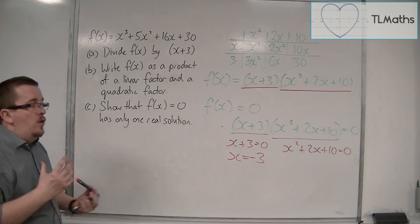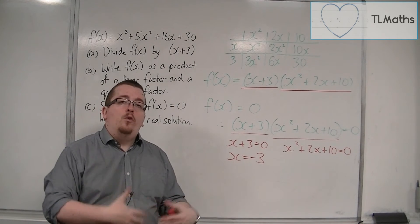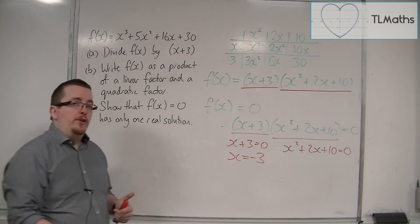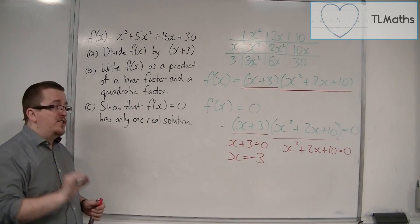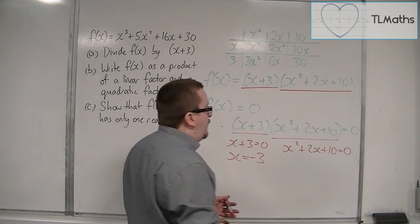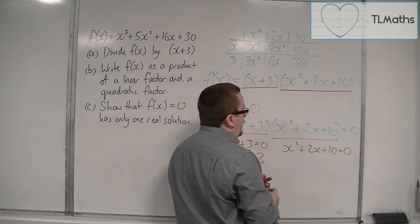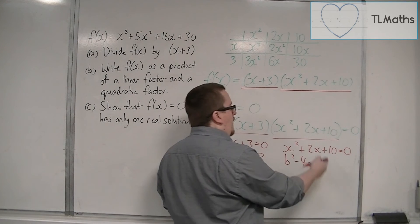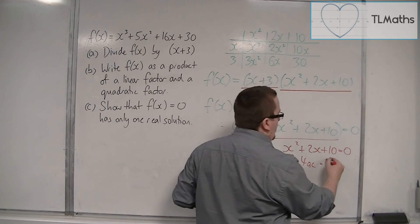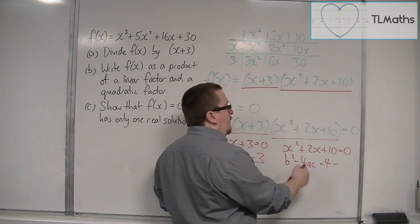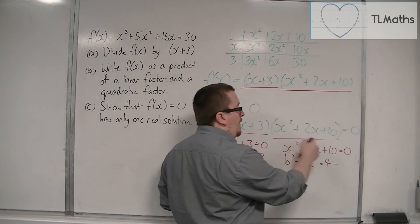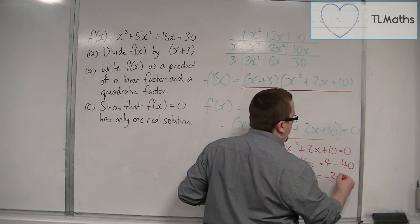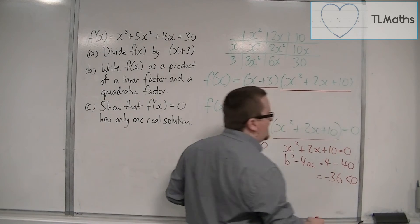We know a way of showing whether a quadratic equation has real solutions: the discriminant. If I use the discriminant, b²-4ac, I get b², so 2² which is 4, take away 4 times a times c. So 4 times 1 times 10, that's minus 40. That gives me -36, and because that's negative,